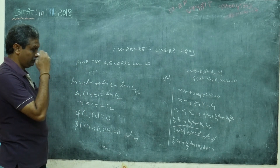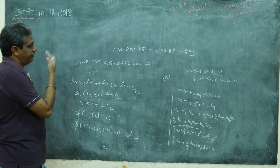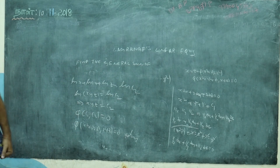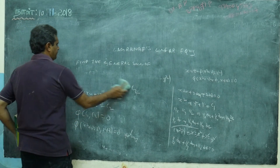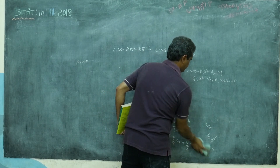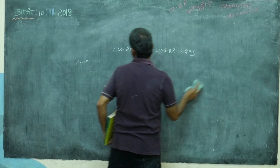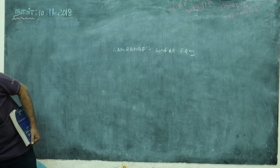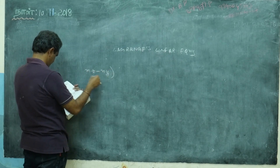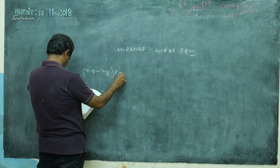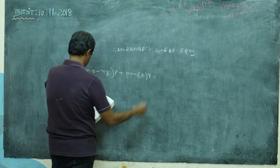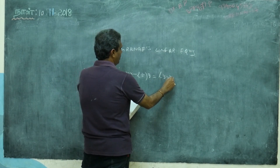Reaching the answer — this is a very very important question from Lagrange's, guaranteed one question. Can you do another problem? This is also a beautiful sum. See: (mz - ny)p + (nx - lz)q = (ly - mx). See how nicely they've given l, m, n, x, y, z in a cyclic pattern.